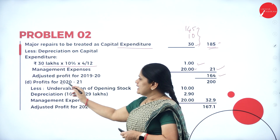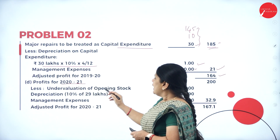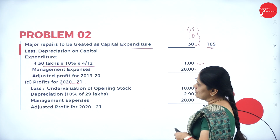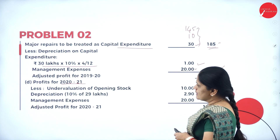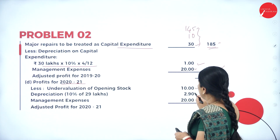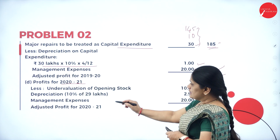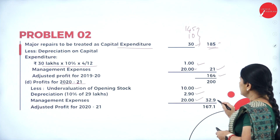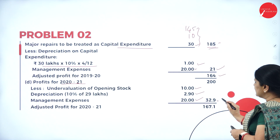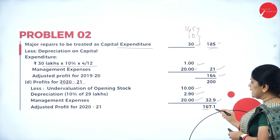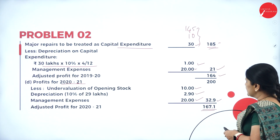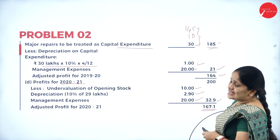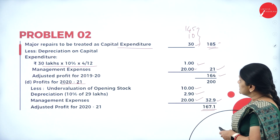For 2020-21, we consider the undervaluation of opening stock, which we deduct, along with depreciation and management expenses. When I add up all the deductions — totalling 32.9 — the adjusted profit is 167.1 lakhs for the year 2020-21.